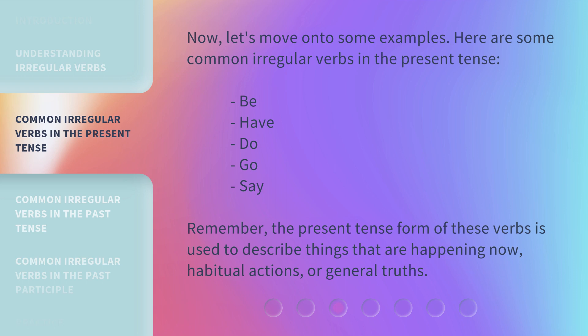Be, have, do, go, say. Remember, the present tense form of these verbs is used to describe things that are happening now, habitual actions, or general truths.